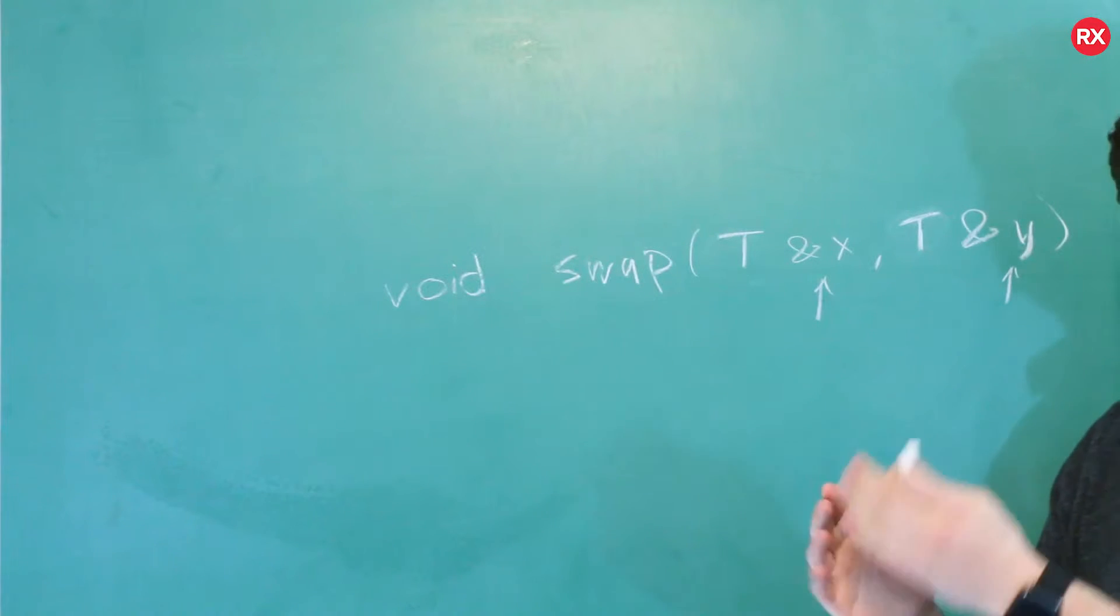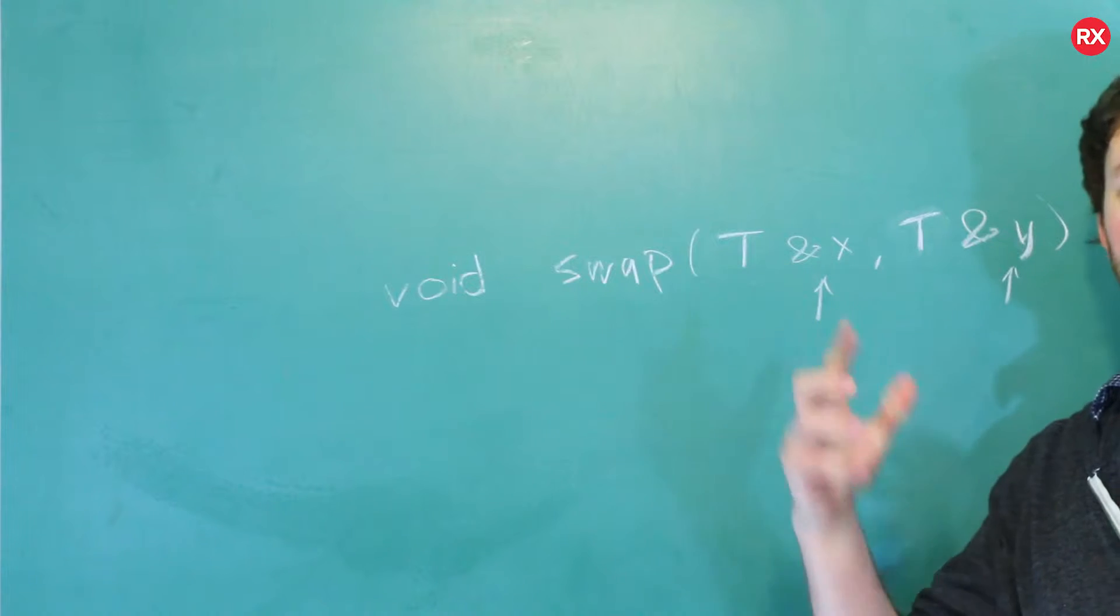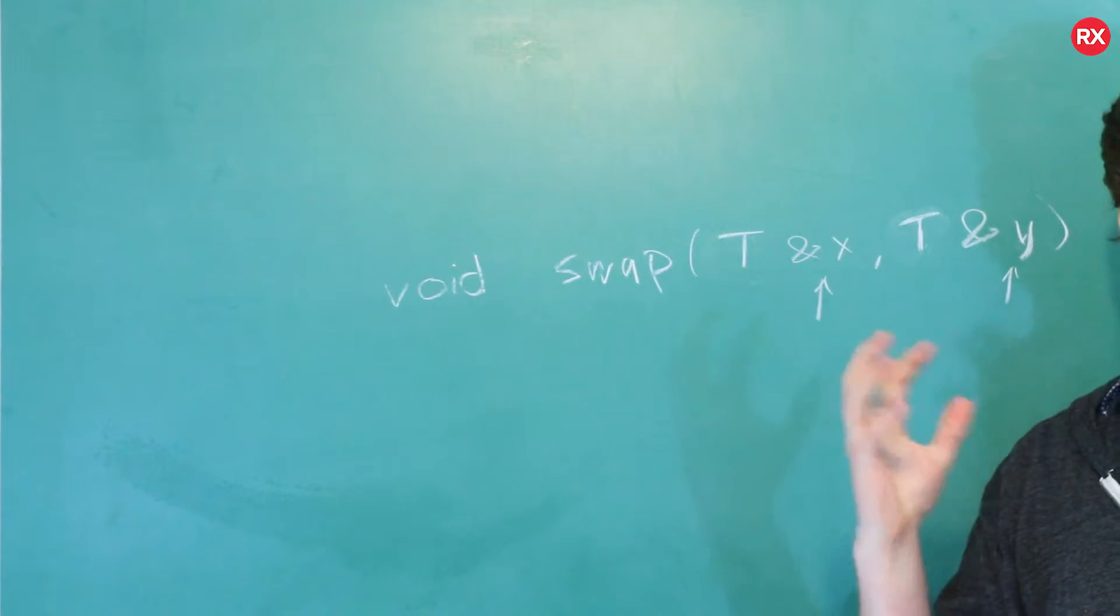And this will work for integers, it'll work for strings, and so forth. But the thing is, when we put a T here, the compiler is just going to assume we're trying to accept type T, as if it was an integer or a custom type. It doesn't quite understand that this is a generic or a templatized function.